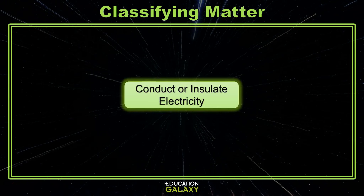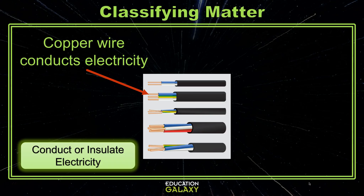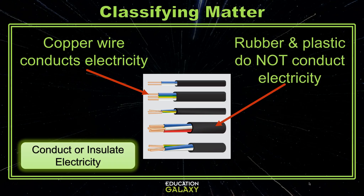Similarly, some materials are great conductors of electricity, like copper and aluminum. Here we see copper wires. Other materials are electric insulators, like wood, plastic, and glass, because they do not conduct electricity. Here we see the copper wires are protected by an insulating layer of rubber or plastic.